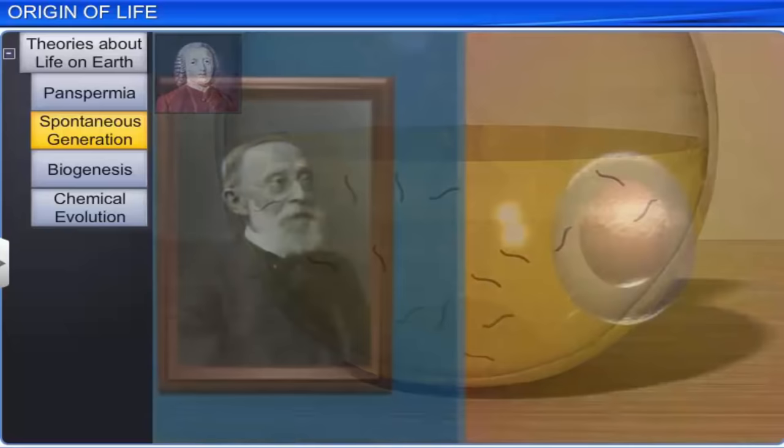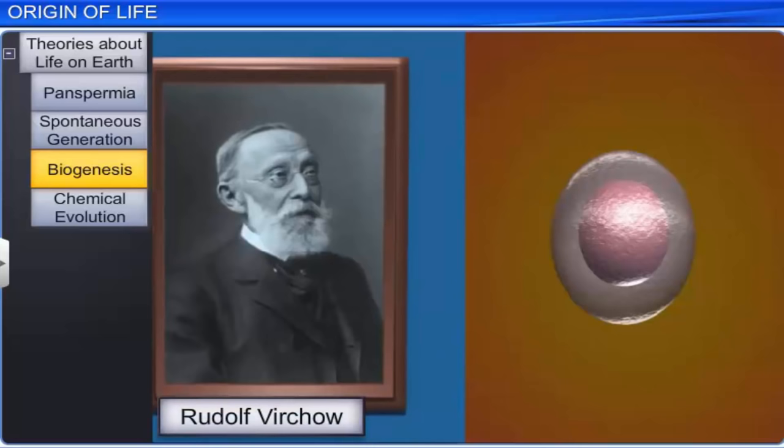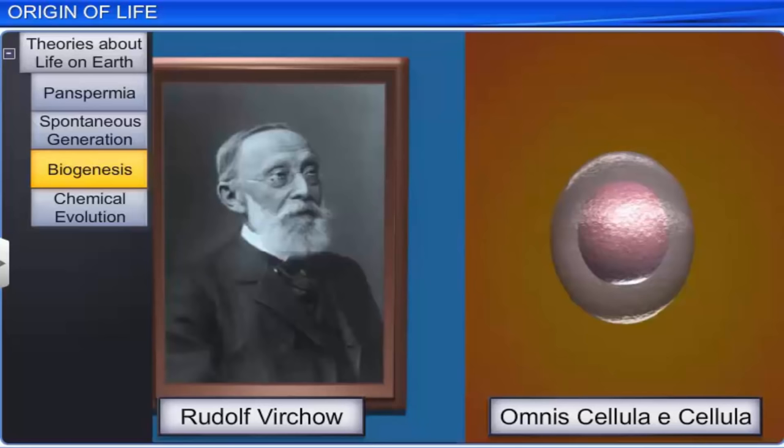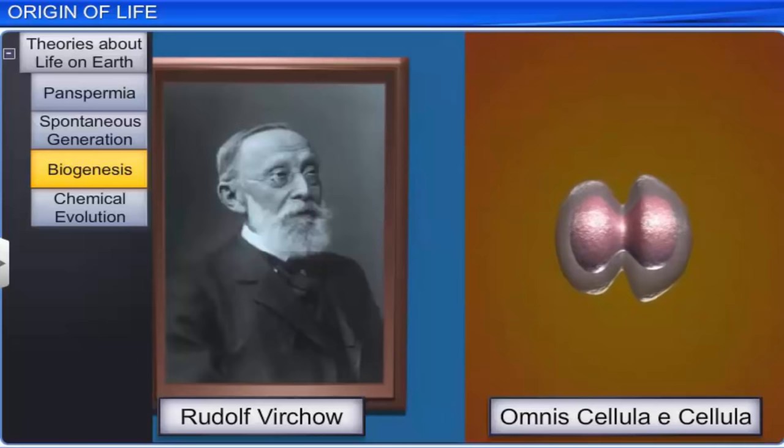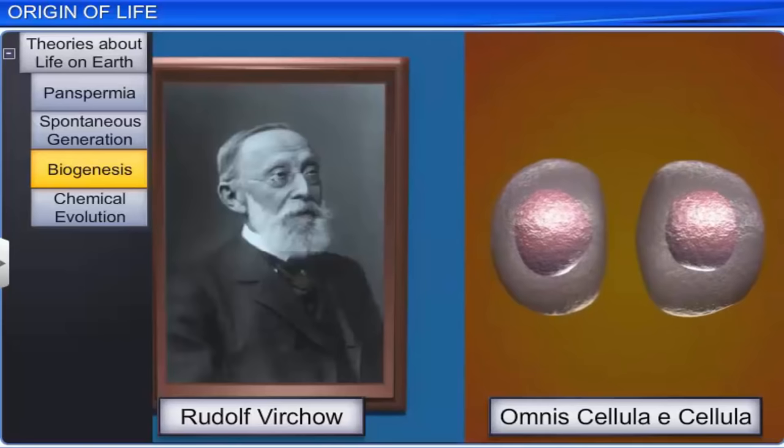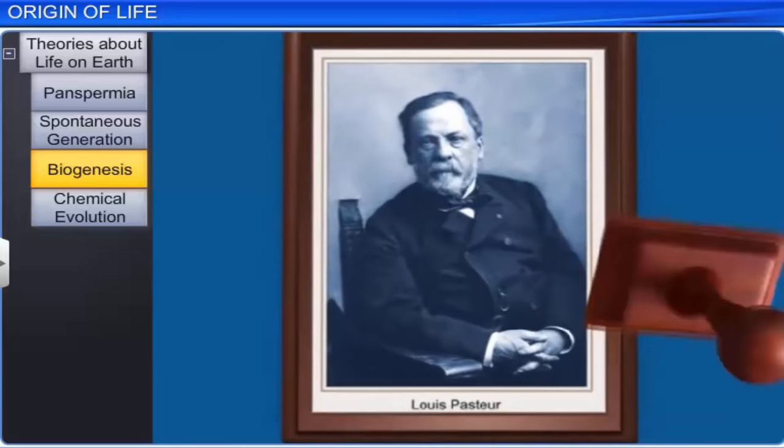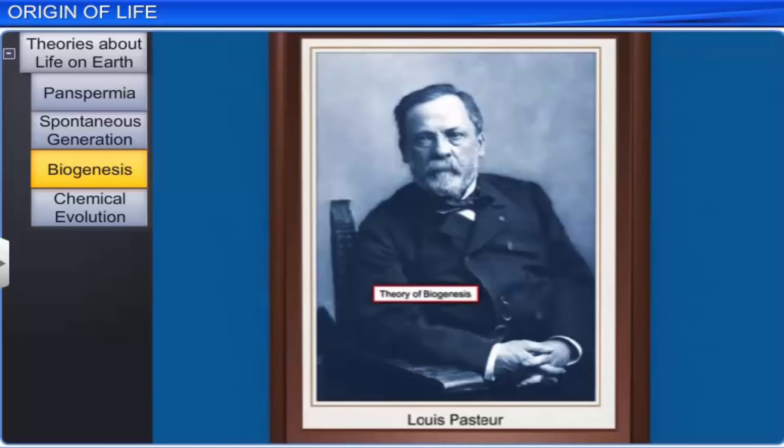The theory of spontaneous generation was in vogue until a German biologist, Rudolf Virchow, challenged it with his theory called Omnis Cellula e Cellula, which expounded that living cells can arise from pre-existing cells. However, he could not prove this theory of biogenesis. Later on, Louis Pasteur, with his experiments, proved the theory of biogenesis and forever silenced the advocates of spontaneous generation.